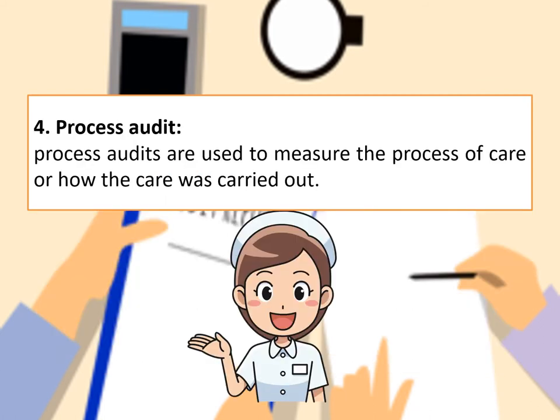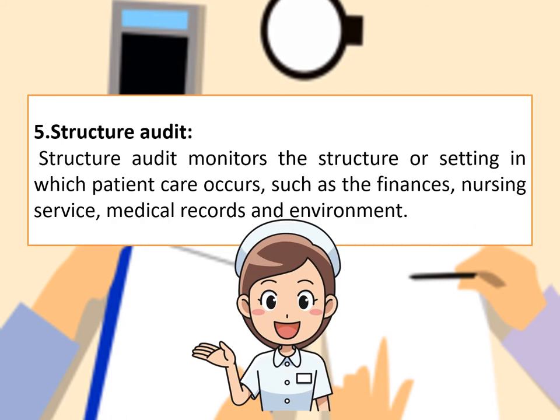The fourth type is process audit. Process audit is used to measure the process of care given, or how the procedure of carrying out patient care is conducted. The fifth type is structure audit. Structure audit monitors the structure or setting in which patient care is offered. It includes finances, number of nursing personnel, type of nursing service, number of shifts, medical record keeping, documentation, and environment.